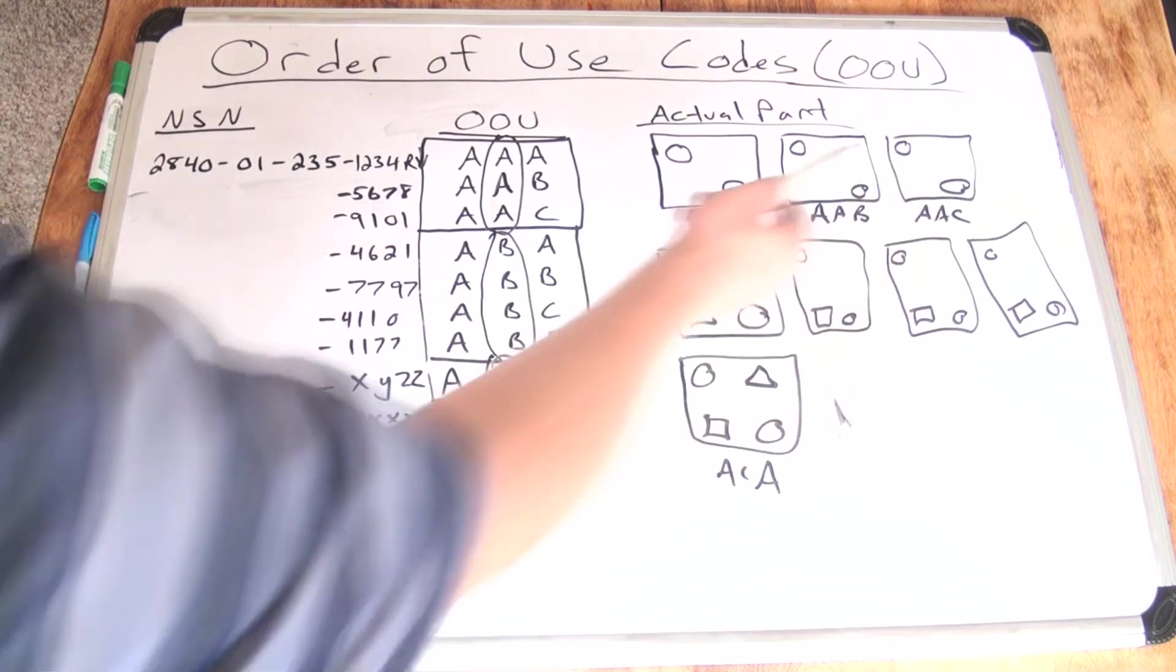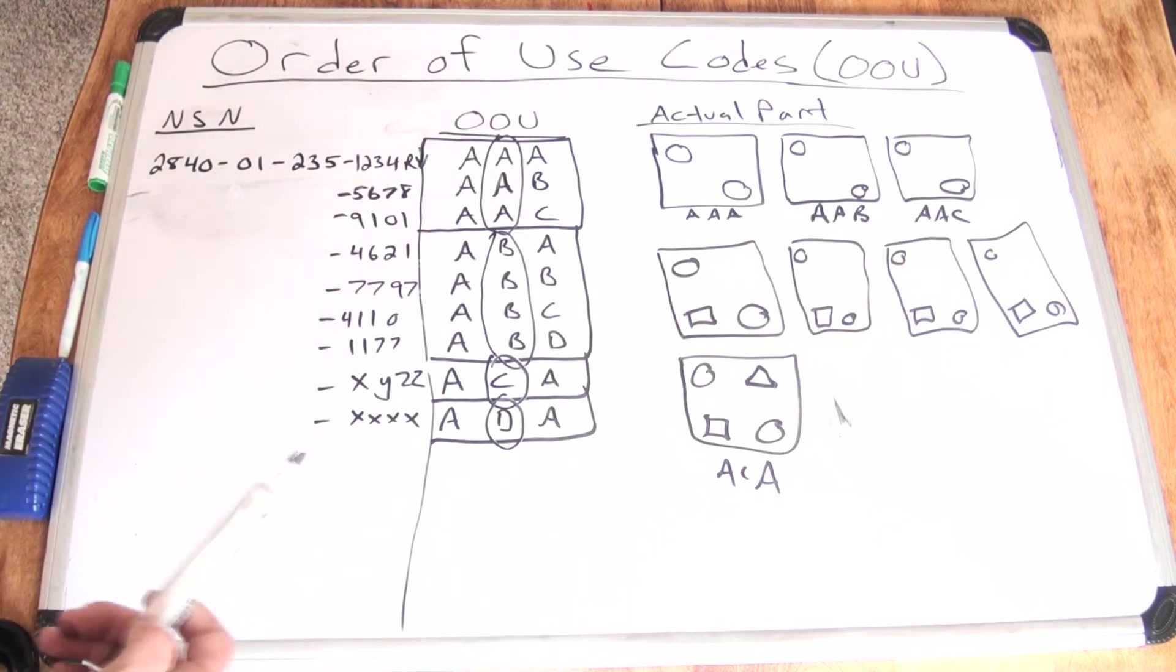And the same thing goes for AAC. Maybe there's a small upgrade that doesn't affect any form, fit, or function. So that's how you kind of get those. Now even within those, there's part numbers, but we'll get into that in another example.